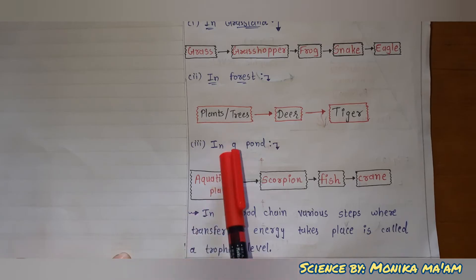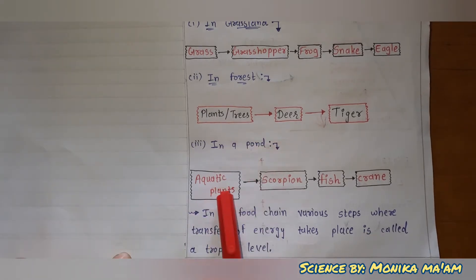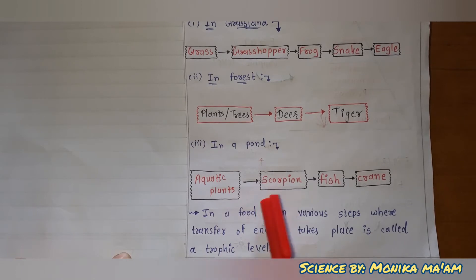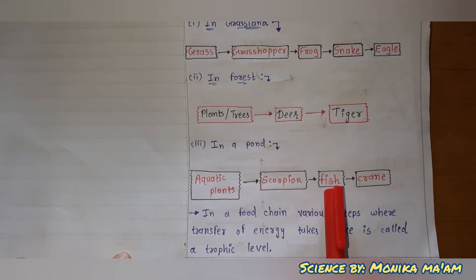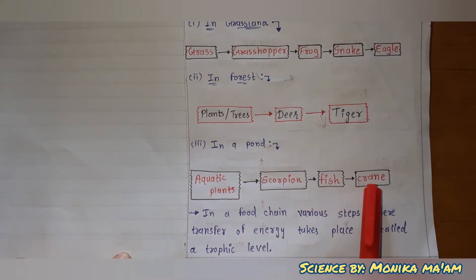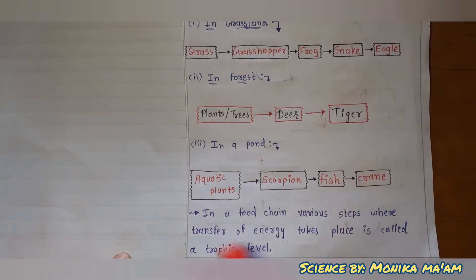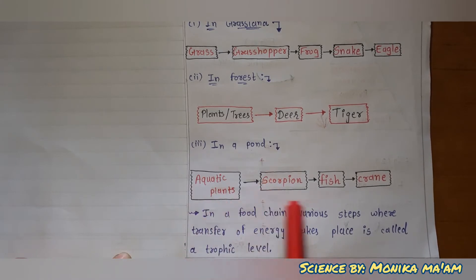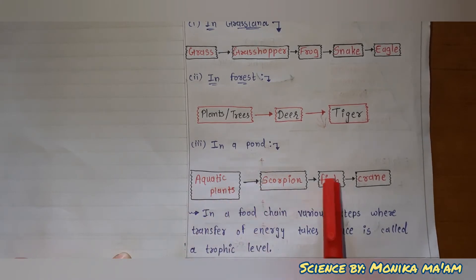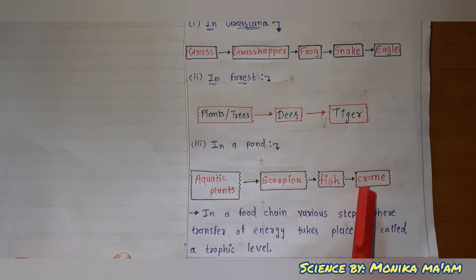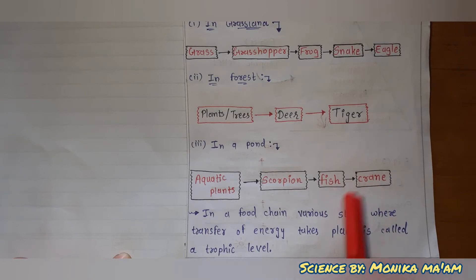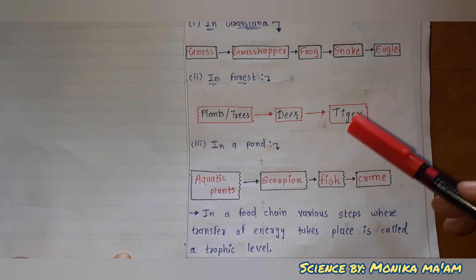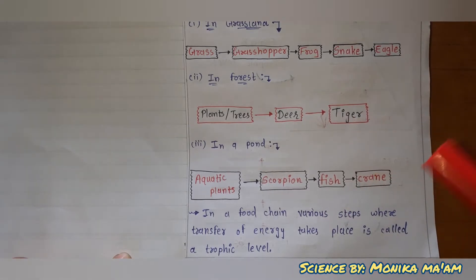A third example is a pond or aquatic food chain: aquatic plants are eaten by scorpion, scorpion is eaten by fish, and fish is eaten by crane. So in these food chains, eagle, tiger, and crane are the top carnivores.